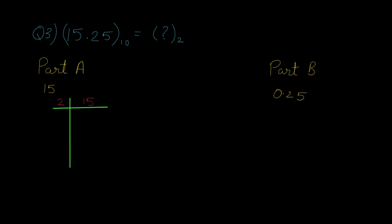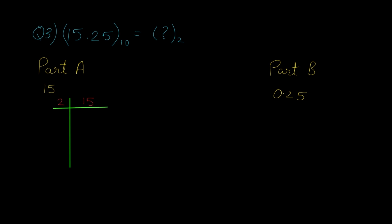The third and last question consists of a combination of both a fraction and an integer decimal number: 15.25 in decimal, which needs to be converted to binary. This problem has two parts. Part A consists of the integer value 15, and Part B consists of 0.25, the fraction. We solve Part A just like question 1 — we write the value 15 and divide by 2 until we get quotient 0.